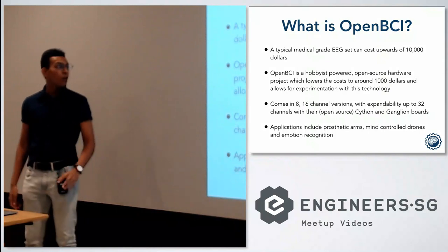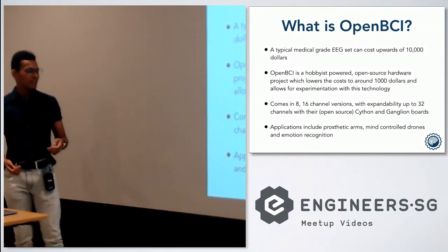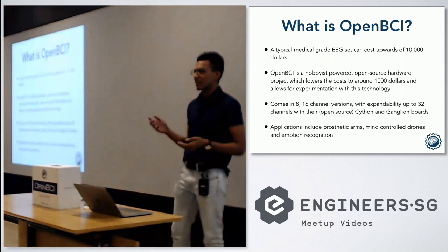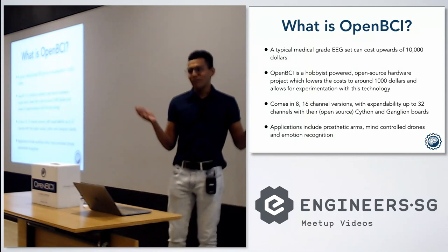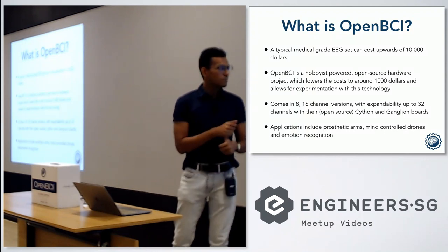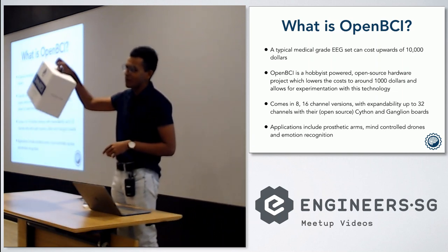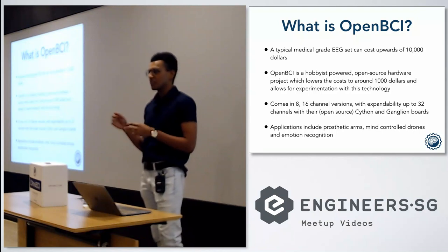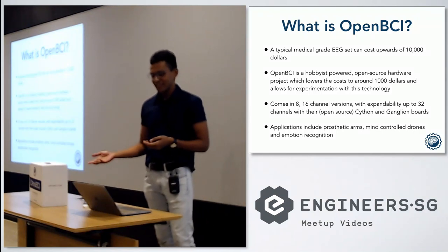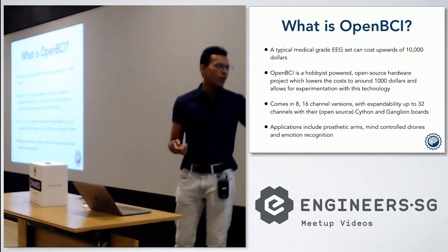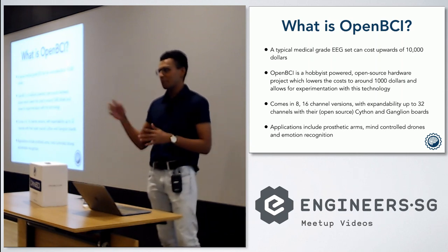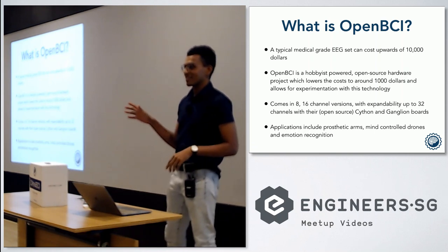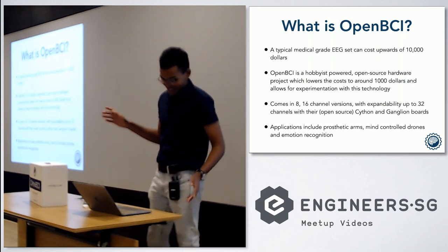So what is OpenBCI then? OpenBCI comes from the words open source and brain computer interface. It's basically a way to make medical-grade EEGs more accessible for hobbyists to play around with. A typical medical-grade EEG can cost upwards of $10,000 or so. This is actually completely hobbyist-powered and fully open source, and this reduces the cost of the kit to about $1,000. It comes with an 8 and 16 channel version, called the Cyton and the Ganglion boards. It can actually expand up to about 32 channels, which is a good medical-grade EEG, even though it's not as good as Elon Musk's Neuralink, which has up to 3,000 electrodes surgically implanted into your brain — so yeah, a different beast.